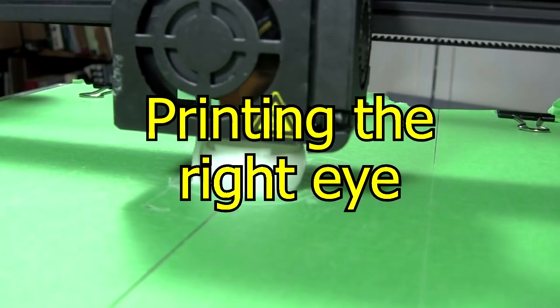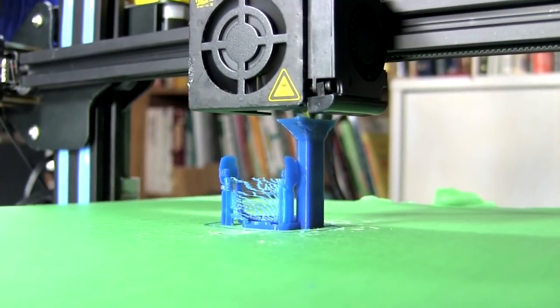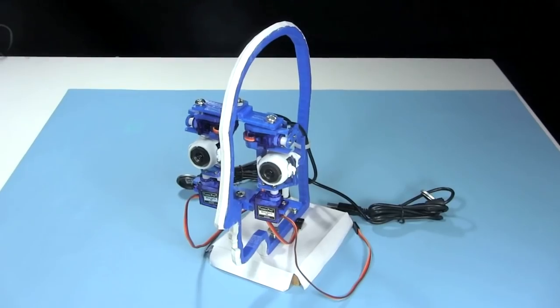Now that I know that the left eyeball works, I print the right eyeball, the eye structure, and all the other parts. And here they both are assembled.